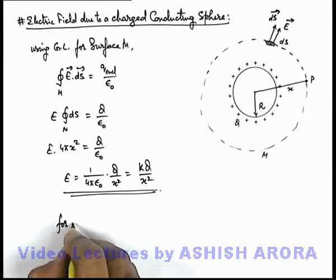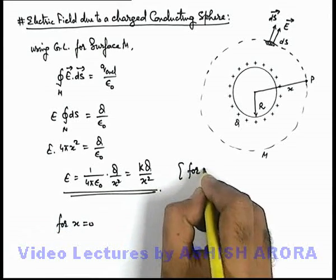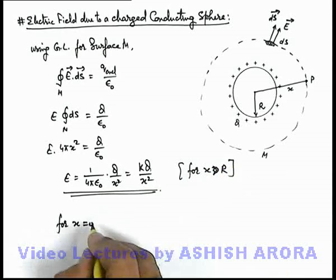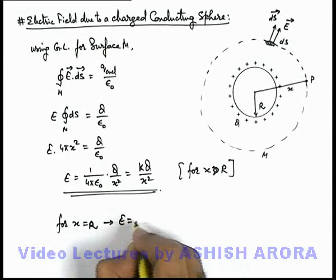And here for x equal to r, this is the result which we are calculating for x greater than r. And for x equal to r we can write this electric field as E is equal to kQ by r square.